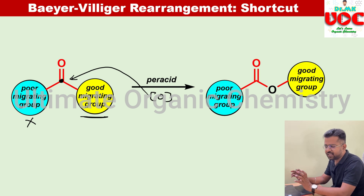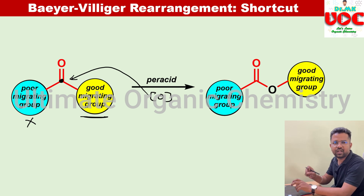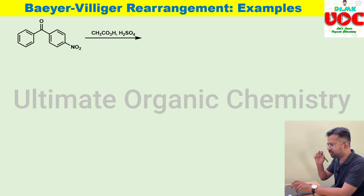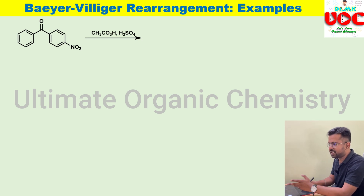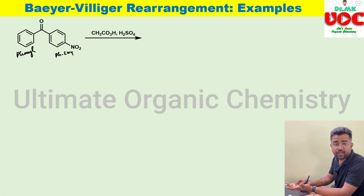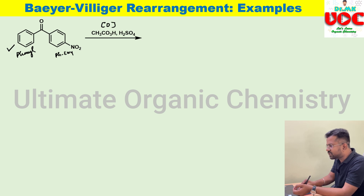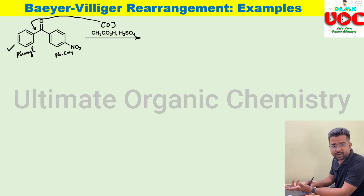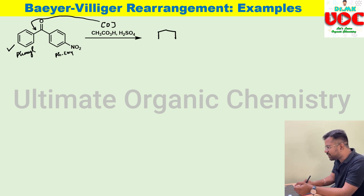Using this shortcut, let us solve some examples. The first is an asymmetrical ketone with a para-nitrophenyl group treated with peracid. Nitro is an electron-withdrawing group, so the para-nitrophenyl is still a phenyl group and therefore a better migratory group than the other substituent. You introduce the oxygen atom between the carbonyl carbon and this phenyl group, giving the corresponding ester product.